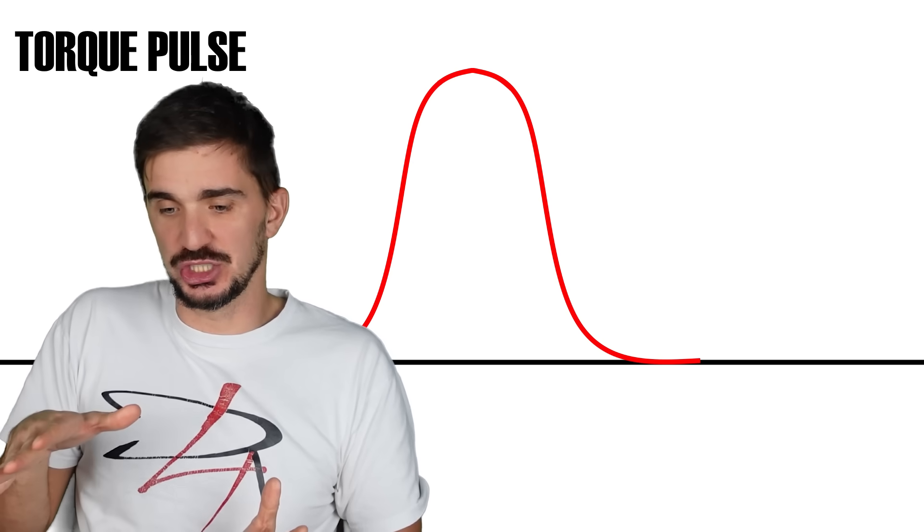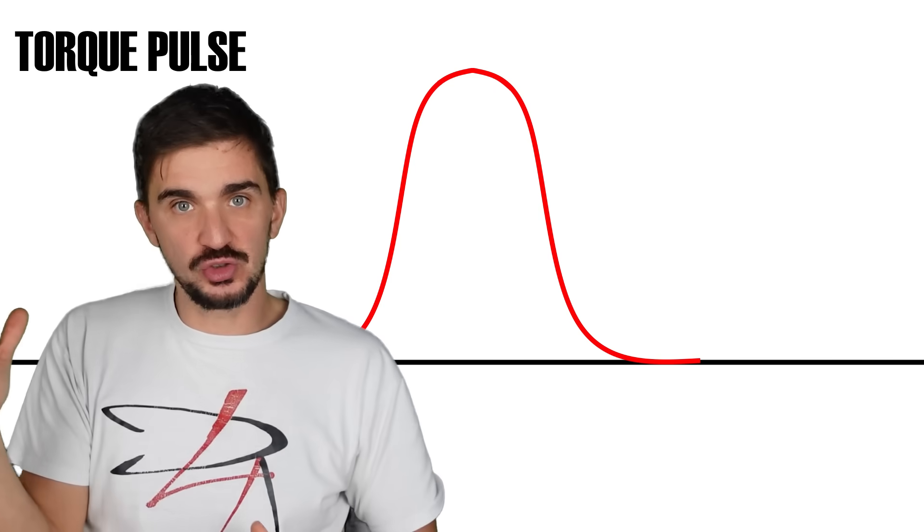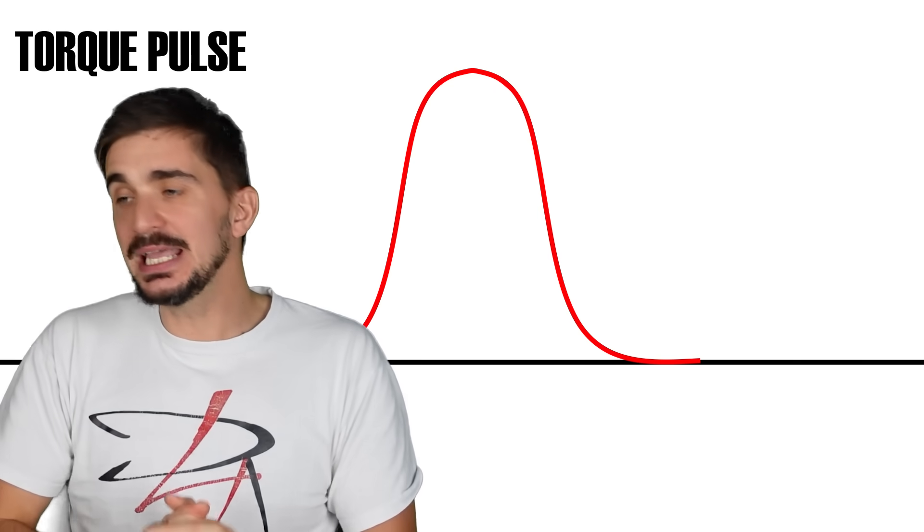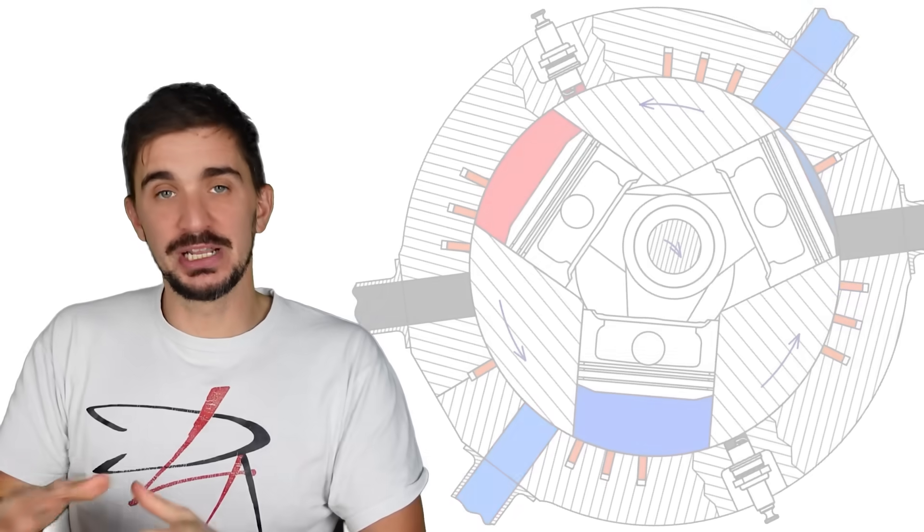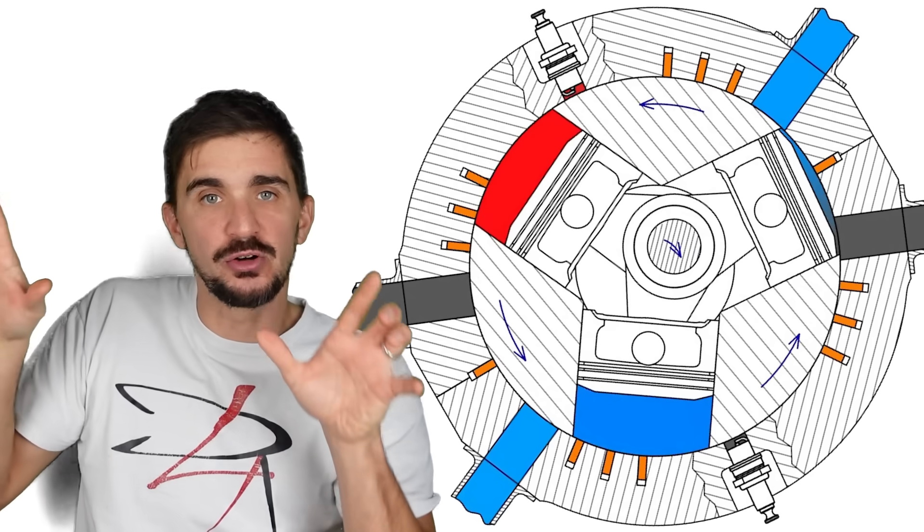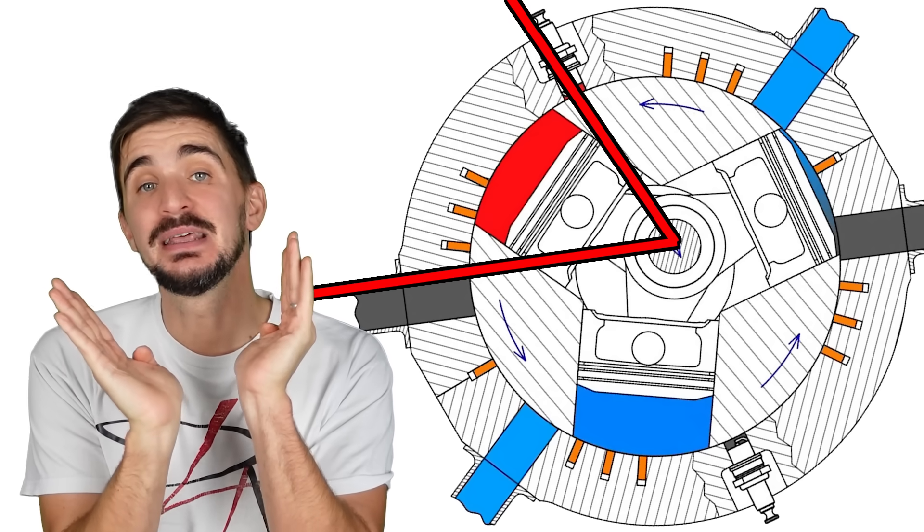Okay, but this then begs the question, can the engine be designed differently? Can we make a long stroke bi-rotary engine? The answer is no. And that's because the bi-rotary shares a key limitation with all the other rotary engines out there, and that's the distance between the ports.